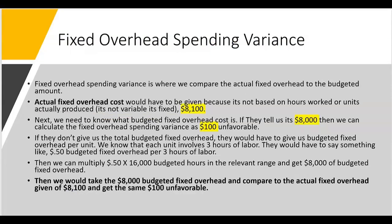Two overhead variances down, two to go. Now we focus on the fixed overhead variances — one for spending and one for efficiency (volume). We'll start with the fixed overhead spending variance, which compares actual fixed overhead to the budgeted amount. The actual fixed overhead cost must be given by the exam because fixed overhead is not based on hours worked or units produced. Let's say actual fixed overhead cost is $8,100.